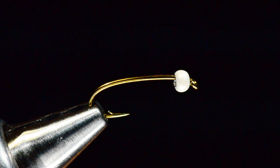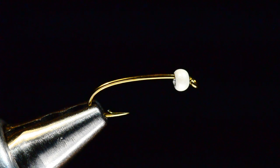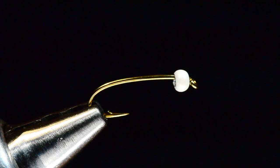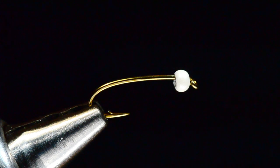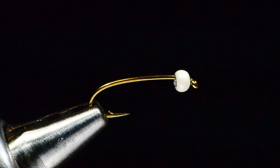Hey everybody, I'm Charlie Craven and today I'm going to tie for you a pattern I've had out for a long time called a Jumbo Juju. This is a Chironomid for Stillwater Fishing, typically in the springtime.